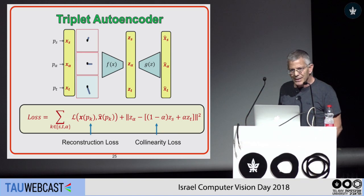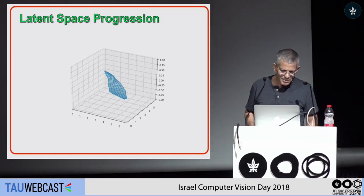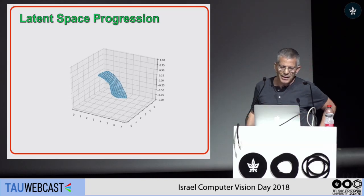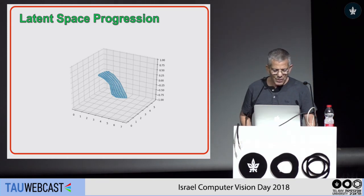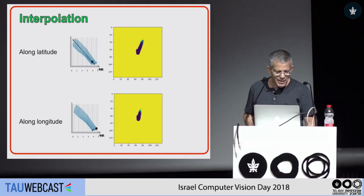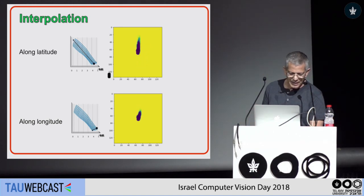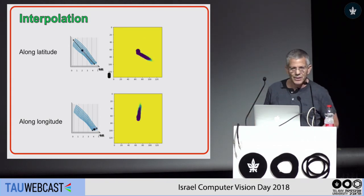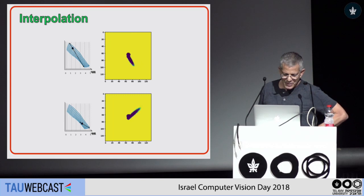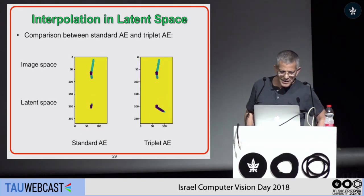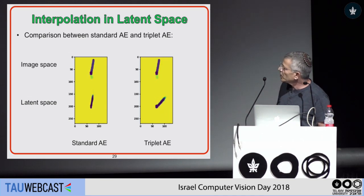Here are results showing the evolution across training epochs of the latent space: the manifold is becoming more flattened. In 2D it is a flat manifold, but in higher-dimensional space it is a convex manifold. When you apply interpolation in this shaped space, the result is much better. The top image shows interpolation along the latitude, the bottom along the longitude — no artifacts at all. Results for arbitrary points in the latent space also look good. You can see the comparison: image space, standard autoencoder, and the triplet autoencoder — the difference is clear.